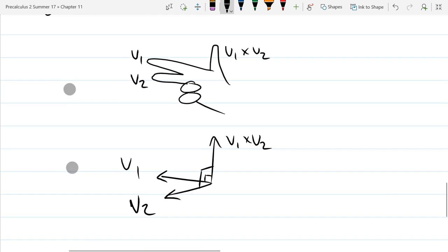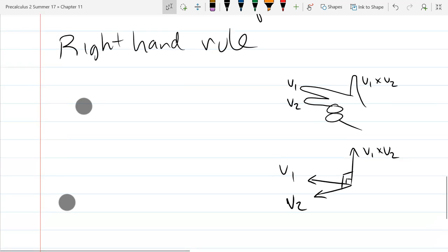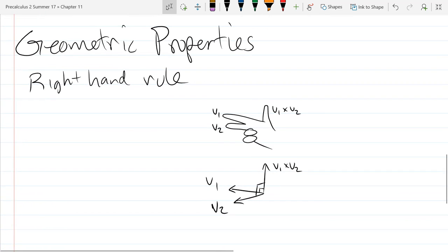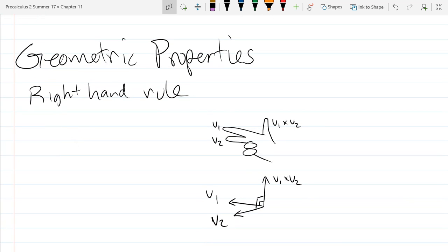So the cross product gives you a third vector that is orthogonal or perpendicular to the first two, and that's our first geometric property and probably the most important geometric property of the cross product.